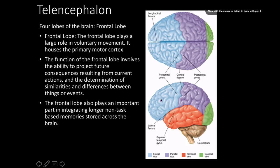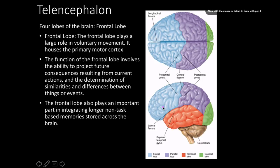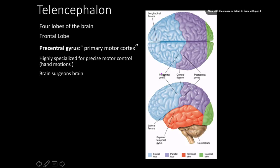The four lobes are the frontal, parietal, occipital, and temporal. The frontal lobe plays a role in voluntary movement — the primary motor cortex is located here — as well as higher-level cognition: projecting consequences from current actions, determining similarities and differences between things or events, and integrating long-term memories stored across the brain. This lobe played a large role in human evolution.